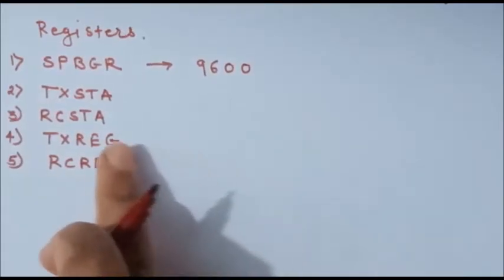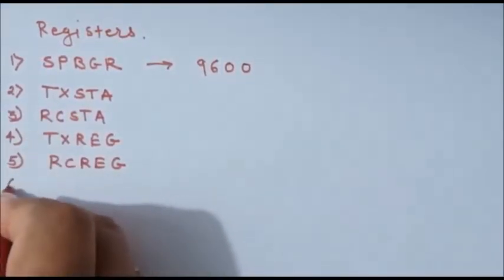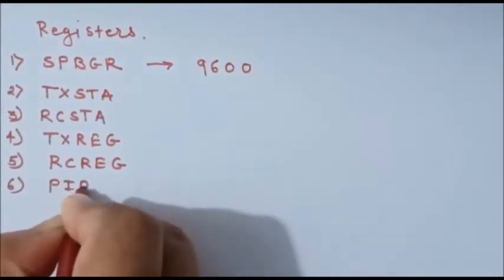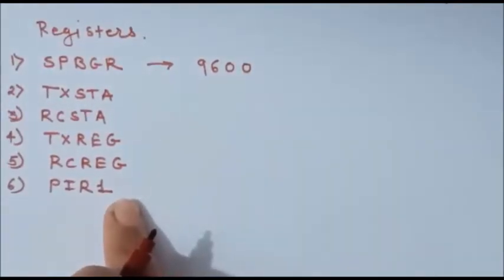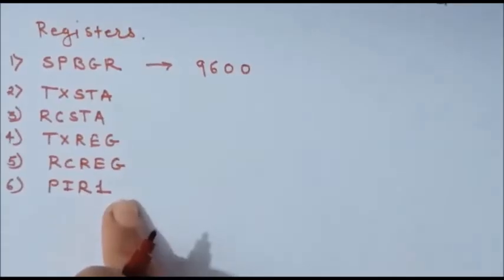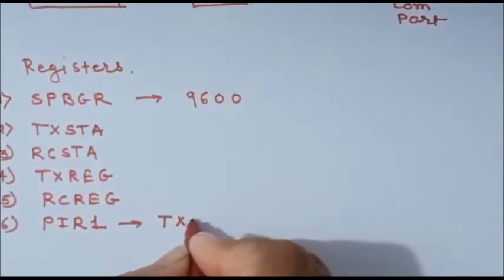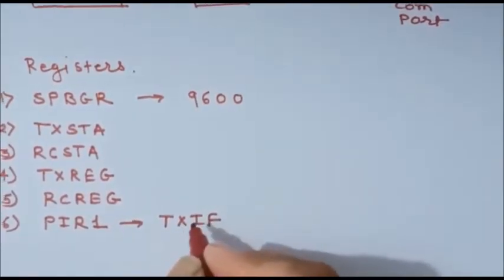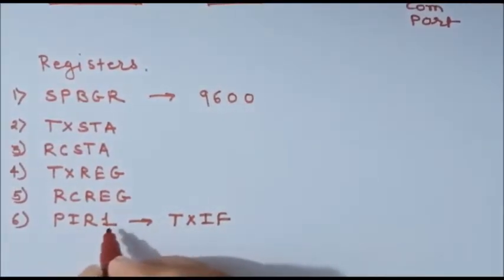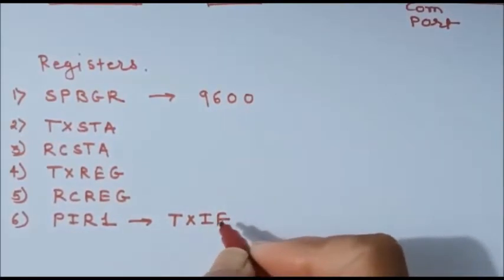The fifth register is the RCREG register — the Receiver register. Data received by the PIC microcontroller will be stored in this register. Since we are writing a transmitter program, we will not use this register. But if you are writing a receiver program, you have to use it. The next register is the PIR1 register — the Peripheral Interrupt Request register. The TXIF transmitter flag bit of this register is used to check whether one character has been transmitted or not. When transmission of one character is completed, the TXIF flag is set to 1 by the microcontroller, and the user can check this flag to verify data transmission.